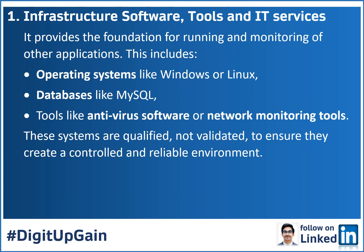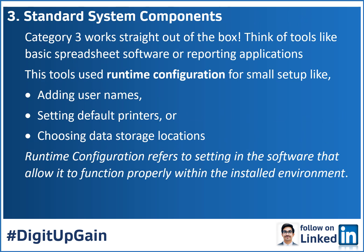Let's delve into each category briefly. Category 1 is infrastructure software tools and IT services — it provides the foundation for running and monitoring other applications. This includes operating systems like Windows or Linux, databases like MySQL, and tools like antivirus software or network monitoring tools. These systems are qualified, not validated, to ensure they create a controlled and reliable environment.